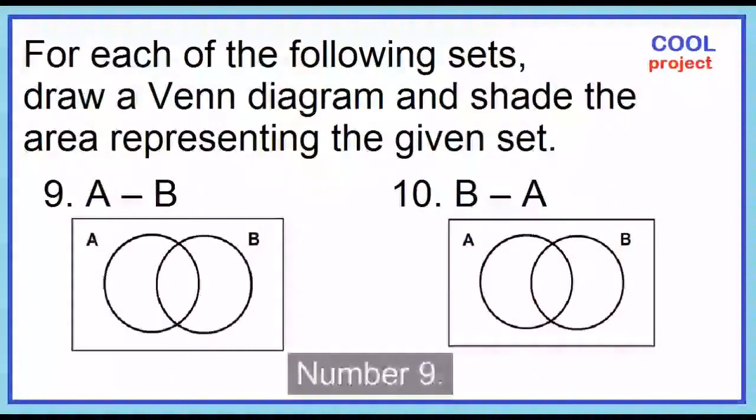Number 9. A minus B. Shade circle A excluding circle B.